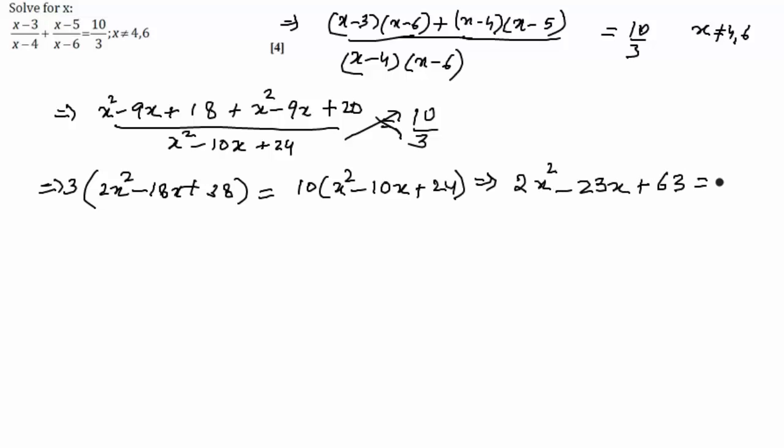Now this is a quadratic equation which can be solved by either splitting of middle term or by discriminant formula. If nothing is mentioned, we can apply the discriminant formula which is equal to b square minus 4ac as d, and therefore the roots will be x1 is equal to minus b